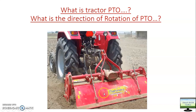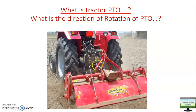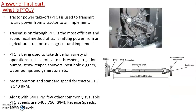As you can see in this figure, this is a tractor where a rotor is being connected through a universal joint shaft to the tractor PTO. There will be one output shaft coming out of this particular housing from the back of the tractor. That shaft is connected to the implement through this universal joint shaft. PTO stands for Power Take-Off. A tractor PTO is used to transmit rotary power from a tractor to an implement, as you can see in this particular photograph — this is the output shaft.